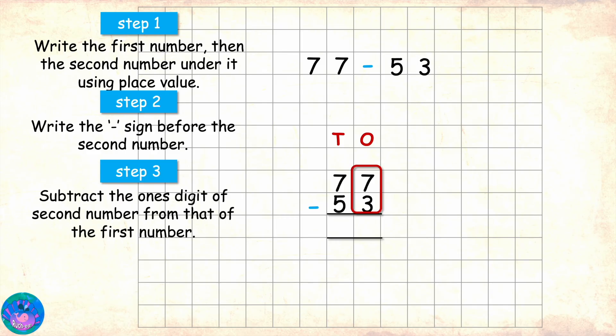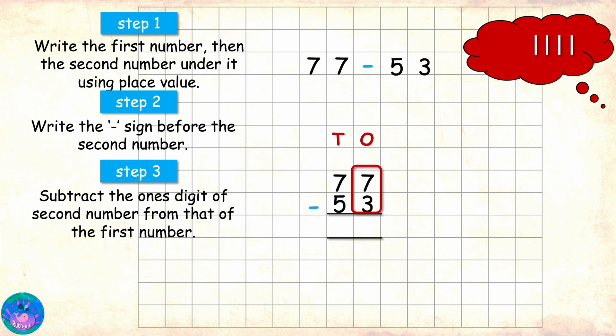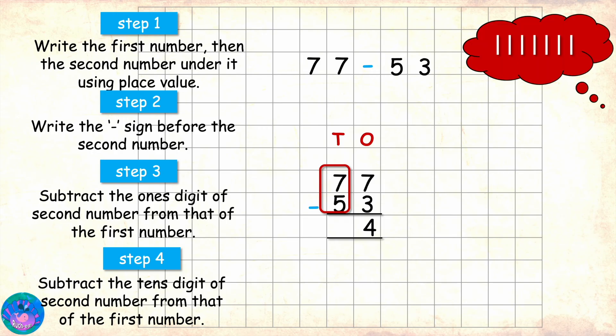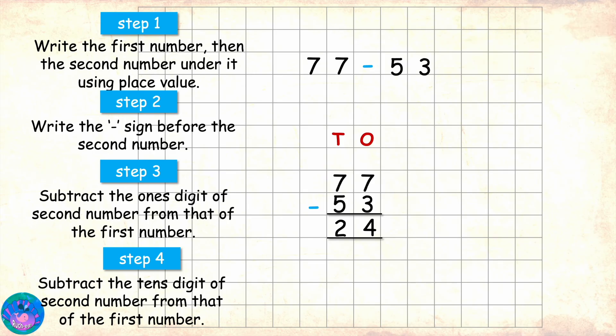Step 3 is to start the subtraction from the ones place. 7 minus 3 is 4, so 4 is the ones place answer. Step 4 is to move to the tenth place. 7 minus 5 is 2 which is the tenth place answer. So the complete answer of 77 minus 53 is 24.